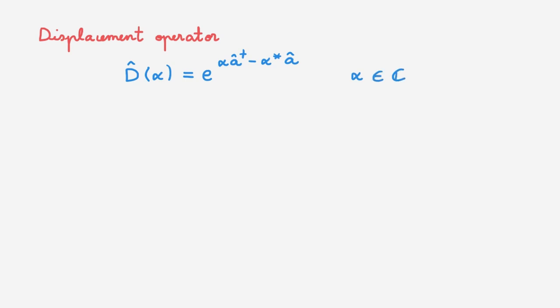At this point, the name displacement operator may appear somewhat arbitrary, but we'll discover later on in the video why this operator has this precise name. The plan for the rest of the video is: first, we will go over a few properties of the displacement operator, including why it has this name; and second, we will explain how it is related to coherent states. But before we do that, we will write the displacement operator in a slightly different form.